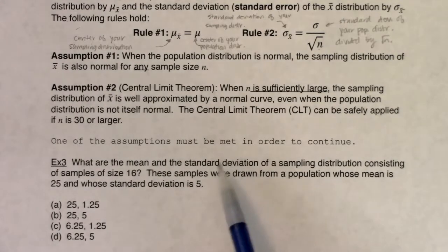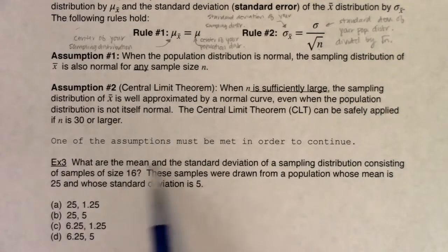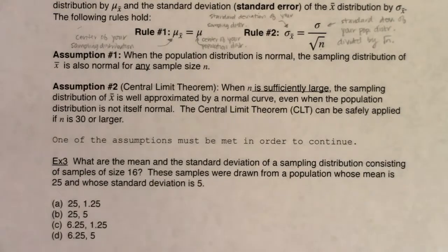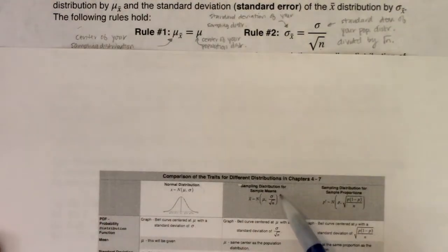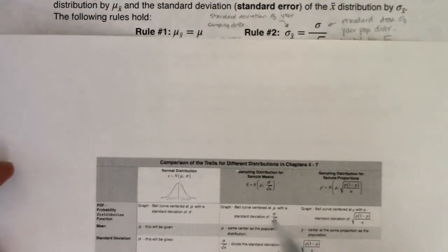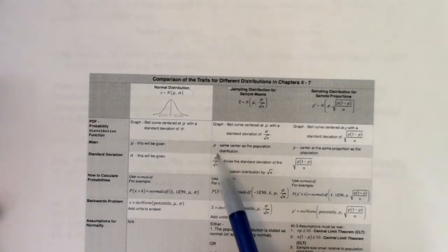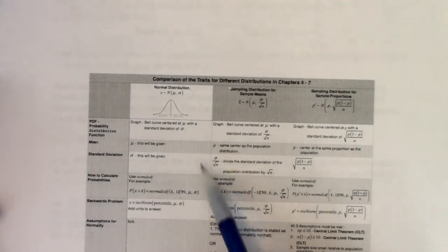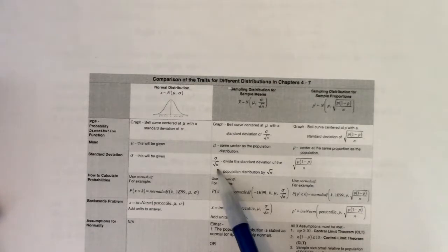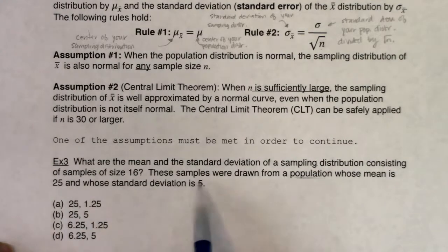Example 3: What are the mean and the standard deviation of a sampling distribution consisting of samples of size 16? These samples were drawn from a population whose mean is 25 and whose standard deviation is 5. So they're asking for the mean and standard deviation of a sampling distribution — we're in mean land, following the X-bar column.